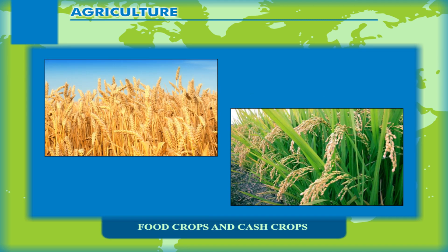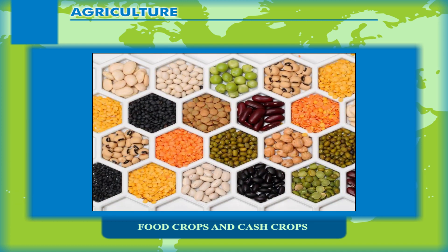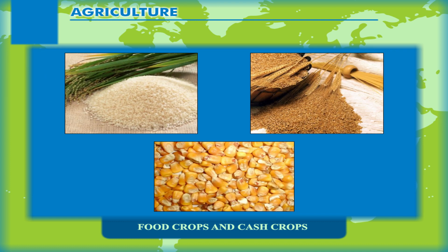Food Crops and Cash Crops: Major crops grown in the world can be grouped into two categories. Food crops include all cereals, pulses, oilseeds, beverages and tubers. Rice, wheat, maize or corn, and millets are the main cereals.